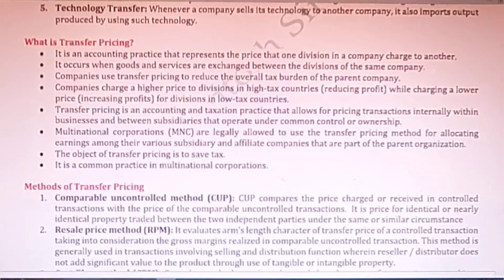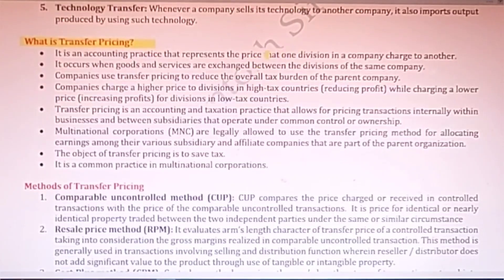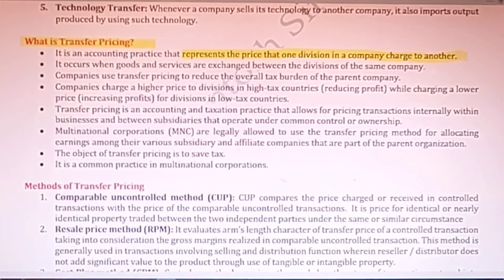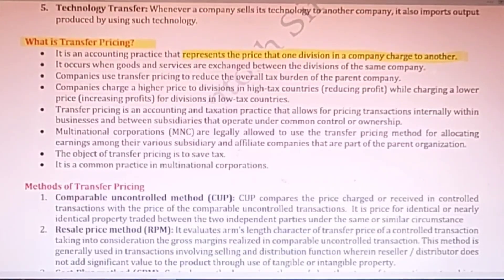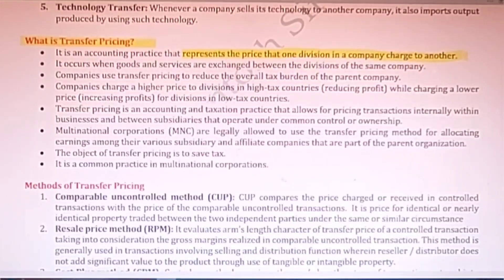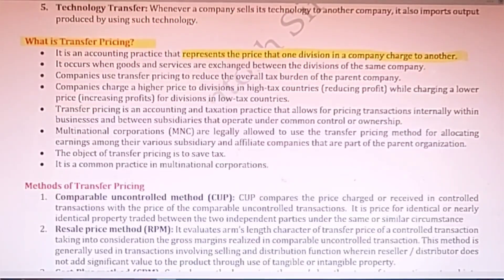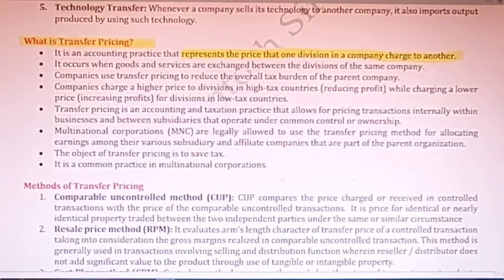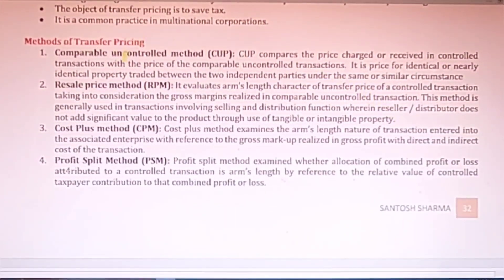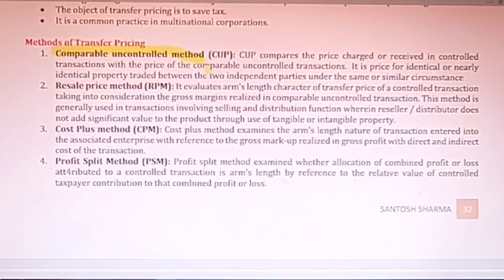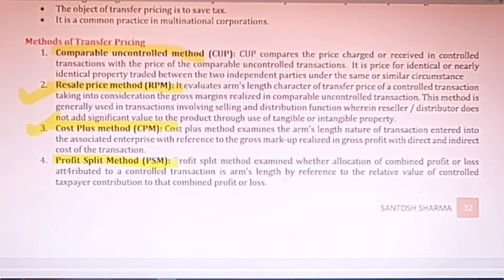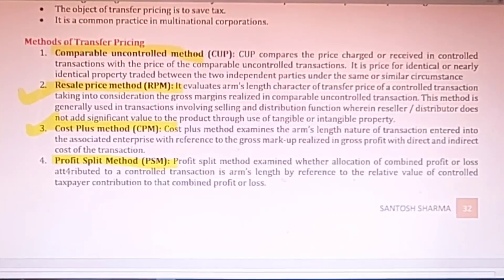An important concept is transfer pricing — it is an accounting practice that represents the price that one division of a company charges to another division. For example, in the case of Unilever, which is present in almost all countries, when it transfers goods from one country to another, it charges different prices in different countries generally to save taxes. Different methods are available for transfer pricing: the Comparable Uncontrolled Price method, the Resale Price method, the Cost Plus Profit method (CPM), and the Profit Split method. Through these methods, transfer pricing can be done easily.